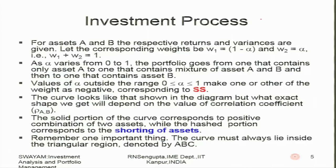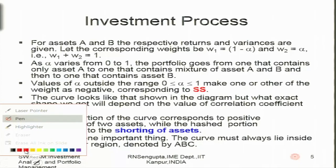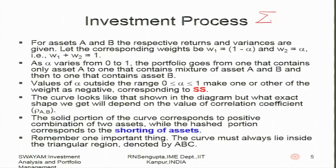Given n number of different assets — all risky (we will later relax this to include the risk-free rate) — the expected portfolio return is the summation of w_i times r_i_bar, where w_i is the weight and r_i_bar is the average return for the i-th asset. This equals r_bar_p, where subscript p means portfolio. The variance of the portfolio, denoted sigma-squared_p, is the double summation over i and j of w_i times w_j times sigma_ij, where sigma_ij is the covariance of the i-th and j-th asset.